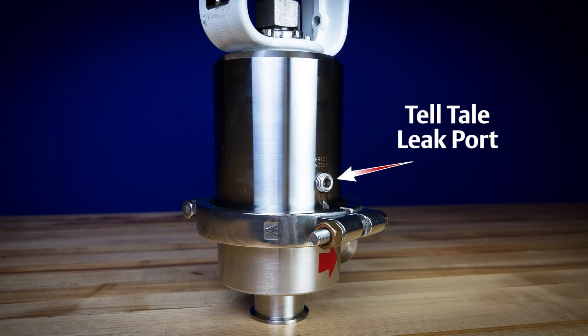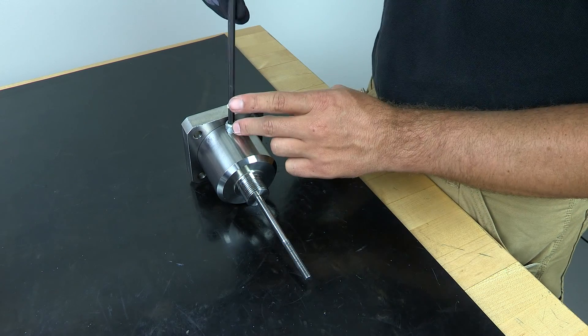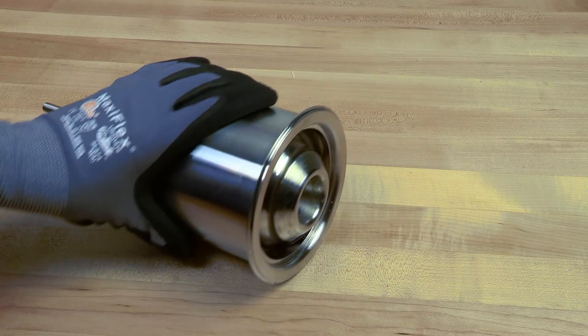The final component in the bonnet assembly is the plug for the Telltale leak port. Apply some sanitary grade grease to the threads and install that.